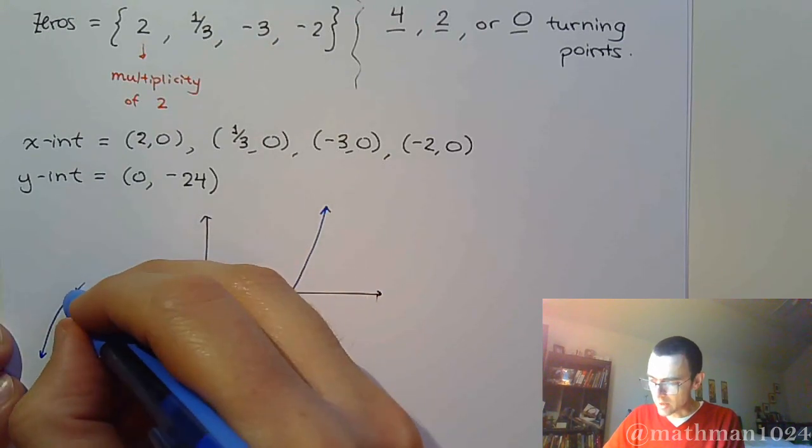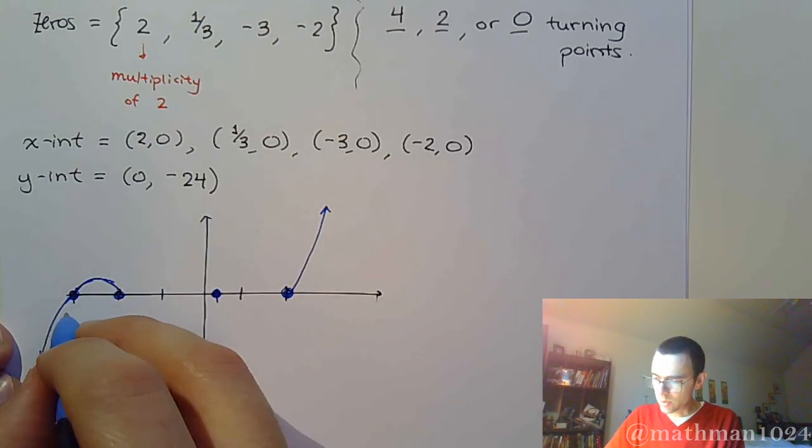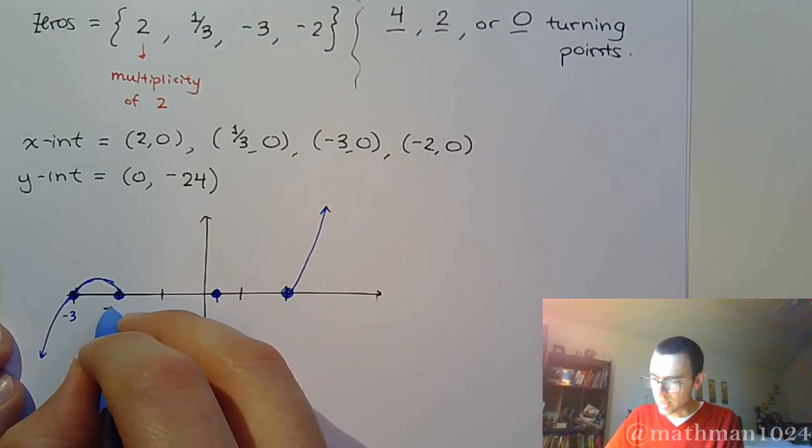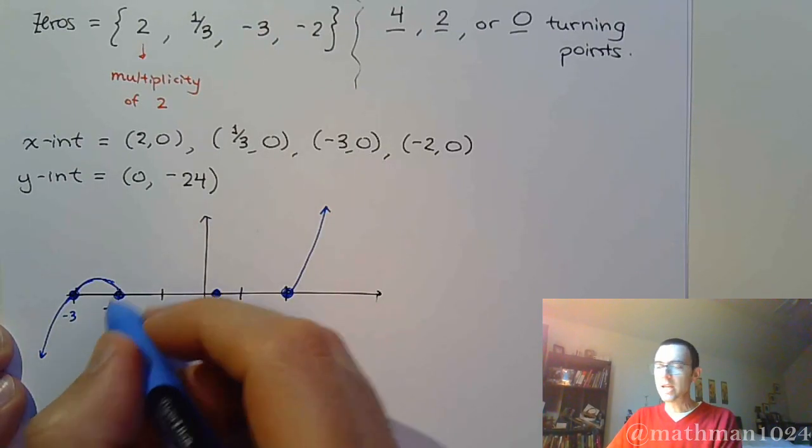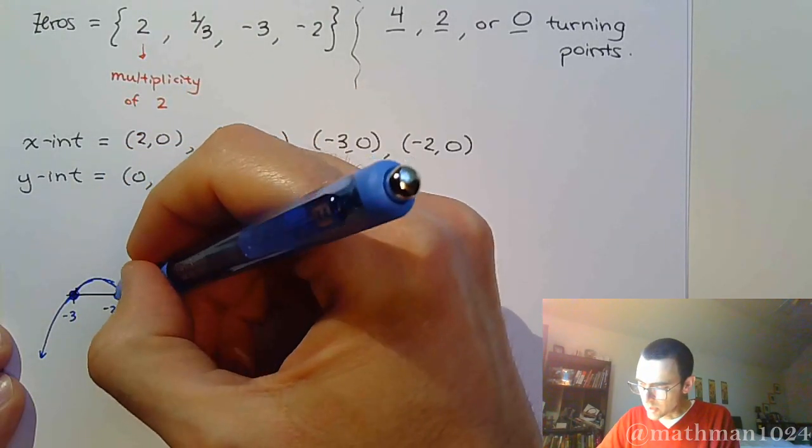But I've got to curve back down and hit this guy. So this was negative 3, this is negative 2, and negative 2 was only there once, so you're going to go through this guy.